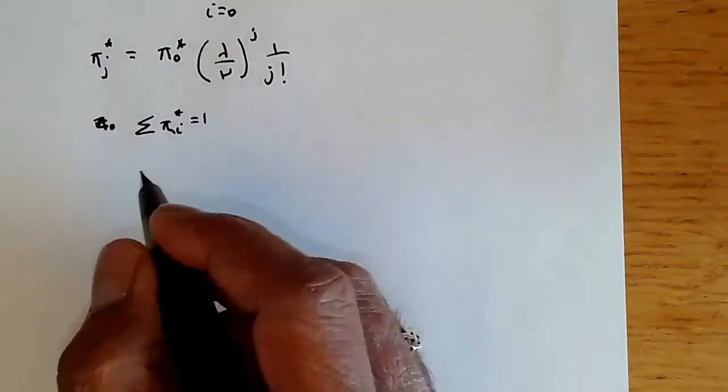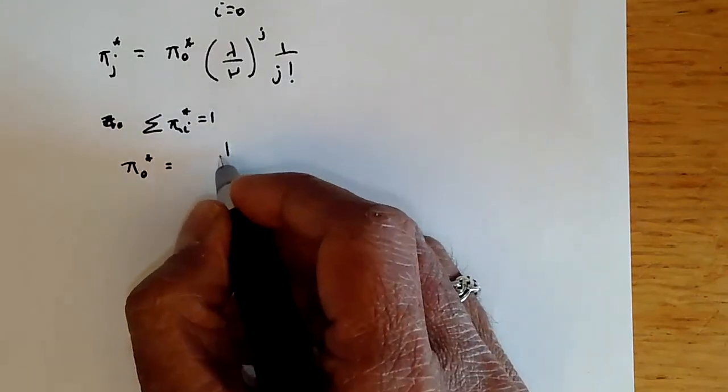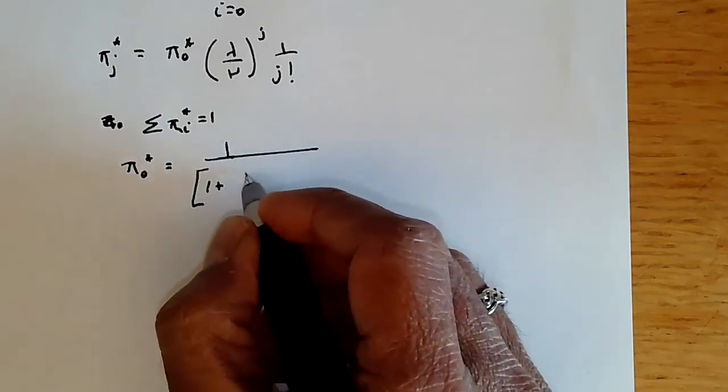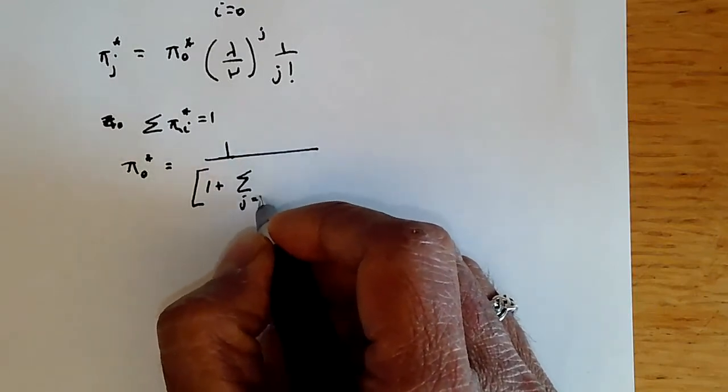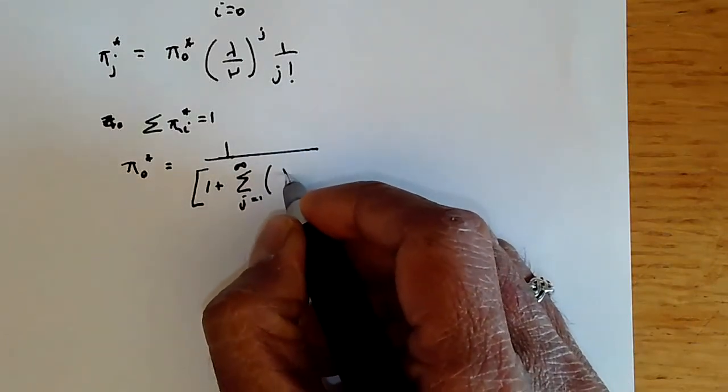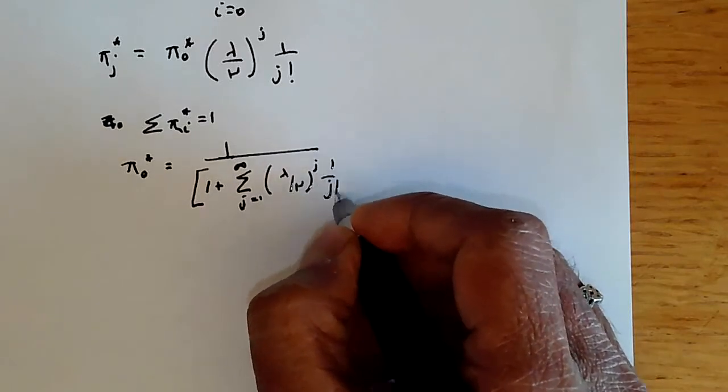And so from that we get pi 0 star is equal to 1 over, and I'll write out the expression, 1 plus j equals 1 to infinity, lambda by mu to the power j, 1 over j factorial.